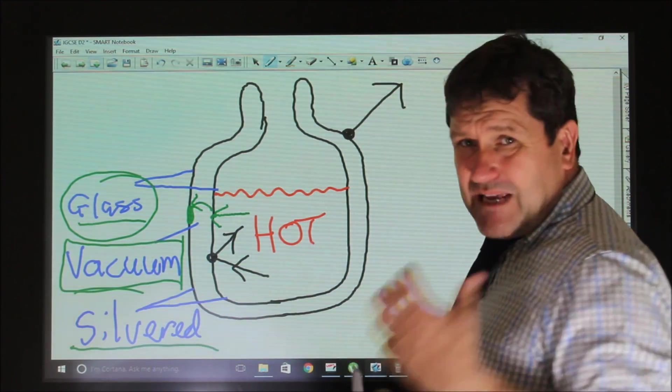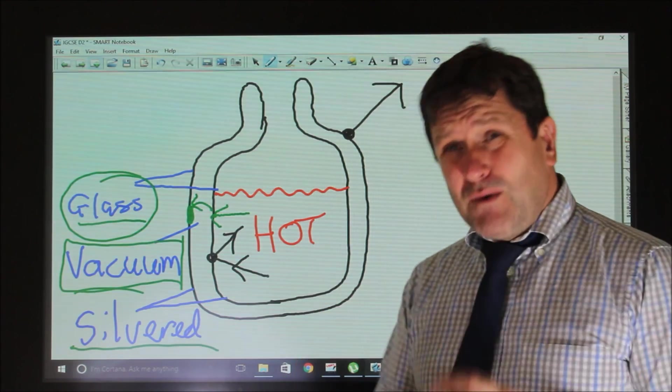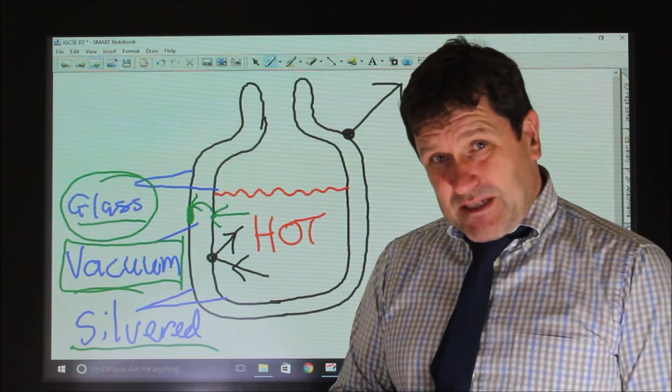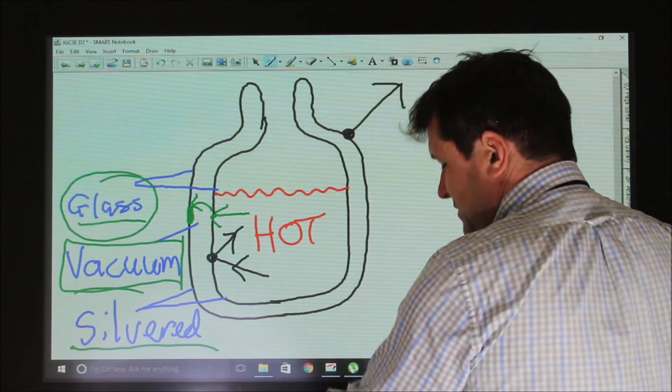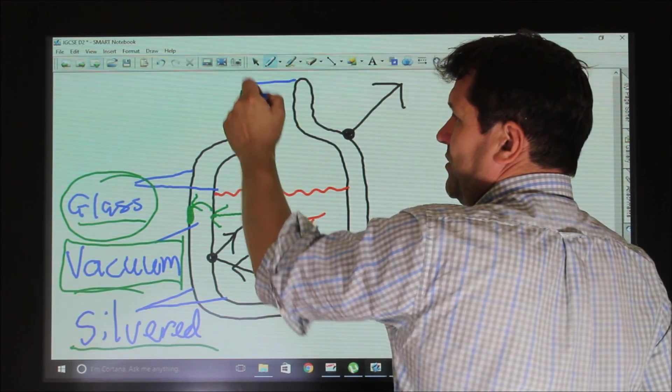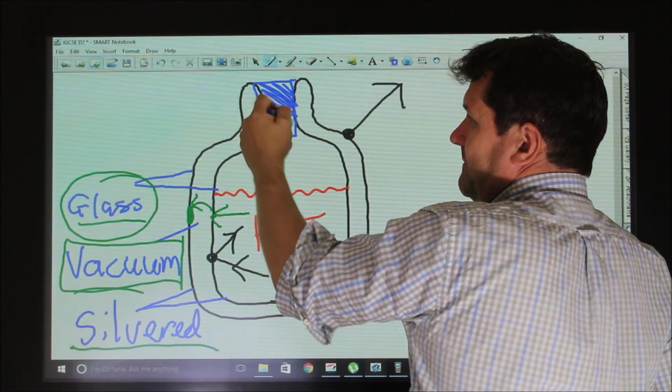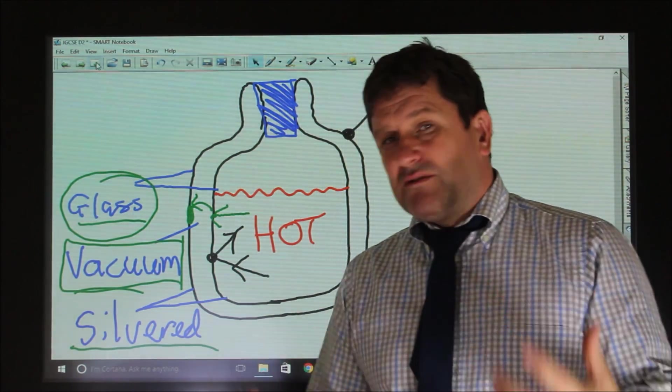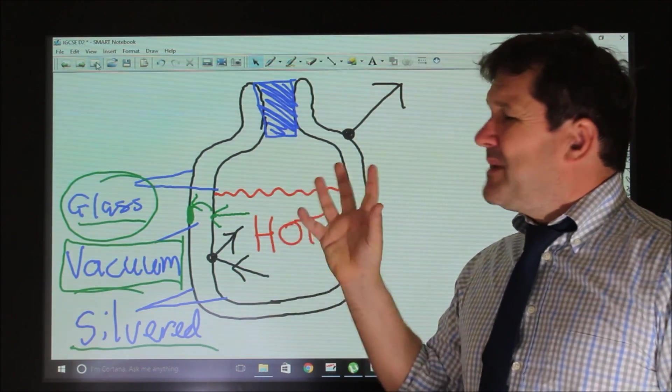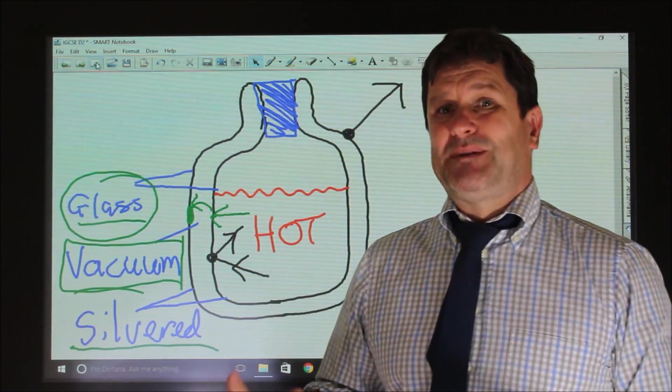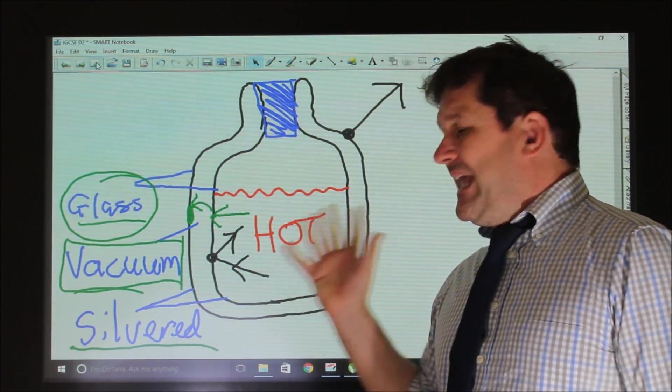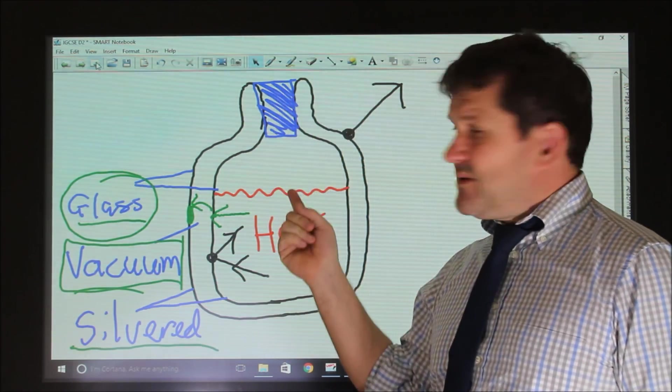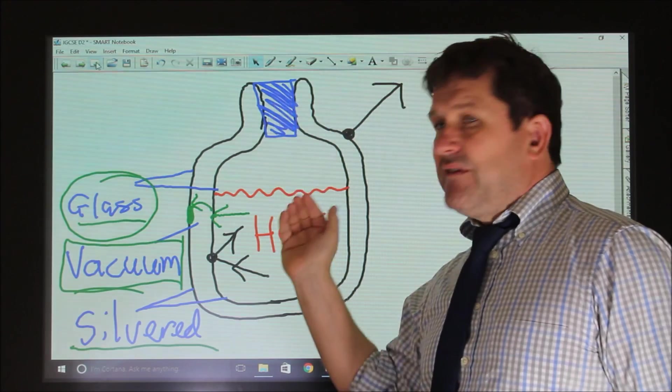One other thing that they typically ask, which is on most exam papers, is to do with air being trapped. For example, I'll draw a cork stopper. This might be your loft insulation question or any question on it, but you typically get a question which concerns trapped air. The heat from the coffee convects up to the bottom of the stopper, so we've got hot air here, so the heat convects upwards.